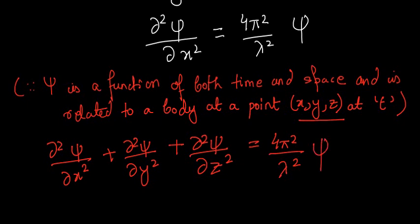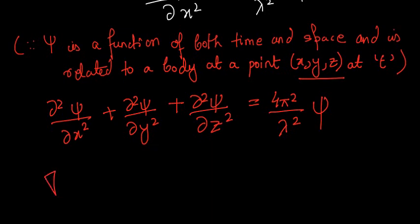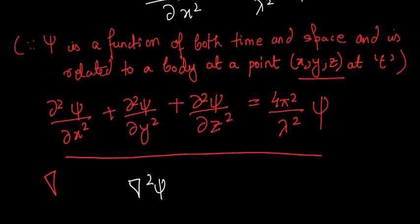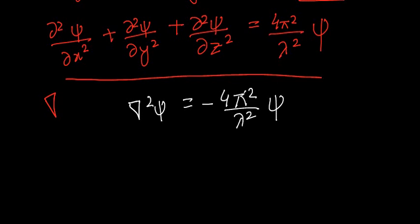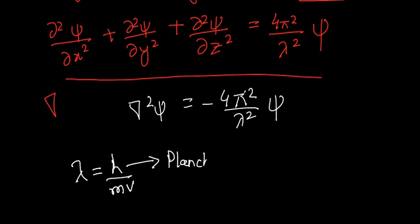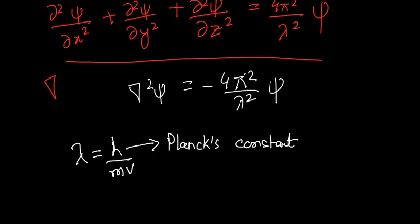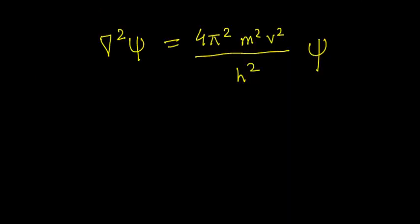Using the nabla symbol instead of the three partial differentiations, this whole equation can be written as ∇²ψ equals minus 4π² by lambda squared times ψ. From de Broglie's relationship, which states that lambda equals h by mv — where h is Planck's constant, m is mass, and v is velocity — we find that ∇²ψ equals 4π²m²v² by h² into ψ.